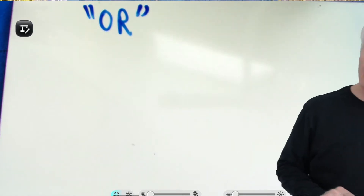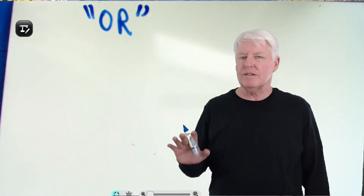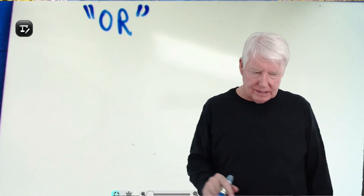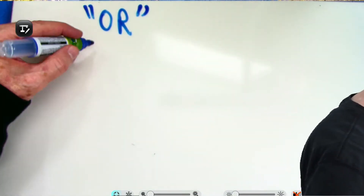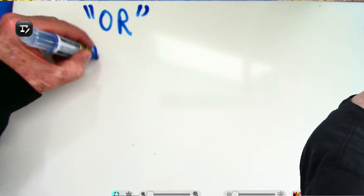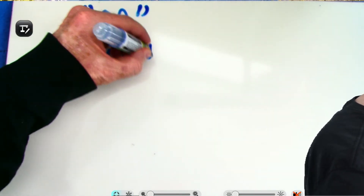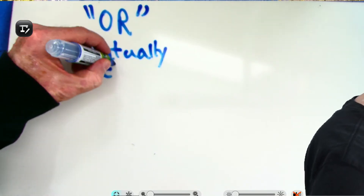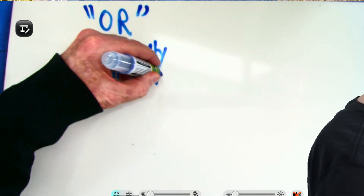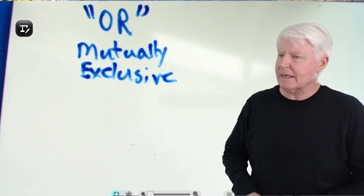The OR statement comes with an assumption. Remember the AND statement came with an assumption — the assumption for the AND statement was independence. The assumption for the OR statement is mutually exclusive. Sometimes people haven't heard that before, so let me explain.